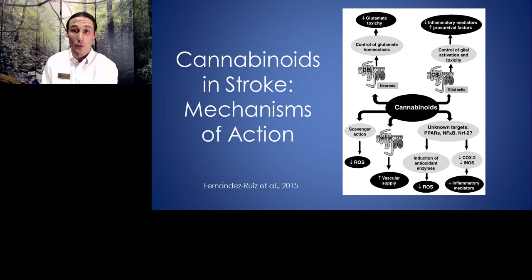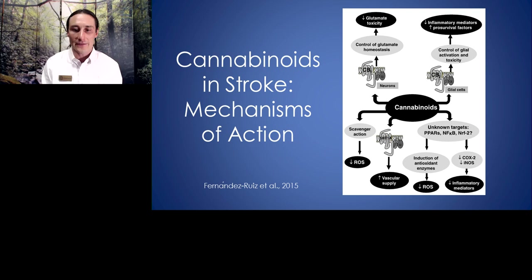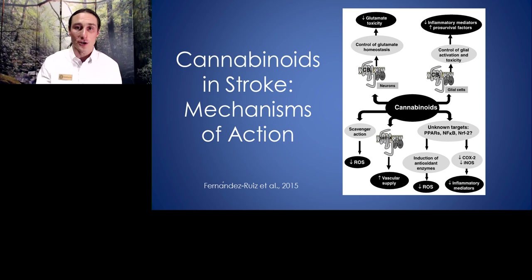We have elucidated many mechanisms by which cannabis can protect against stroke — more than just the CB2 receptor. CB1 receptors are involved in protecting against glutamate toxicity and preventing excessive glutamate release. CB2 receptors, as discussed, provide protection. The cannabinoids themselves are antioxidants and can decrease reactive oxygen species. CBD works on the 5-HT1A serotonin receptor, which can improve vascular supply and make tissue less likely to die from oxygen starvation. There are also unknown targets still being explored.